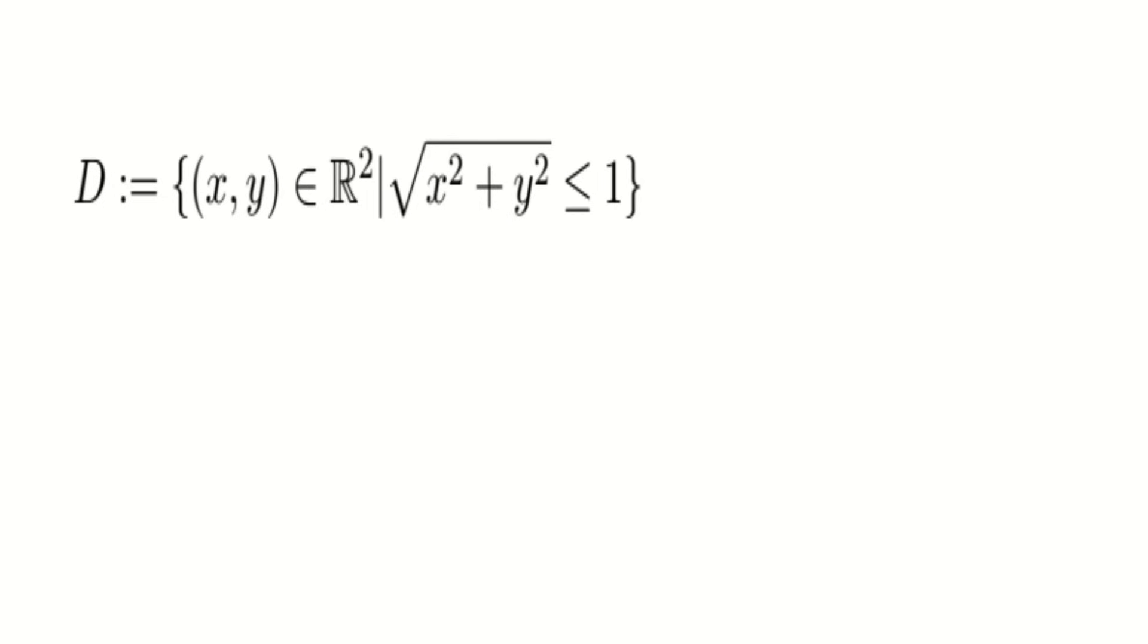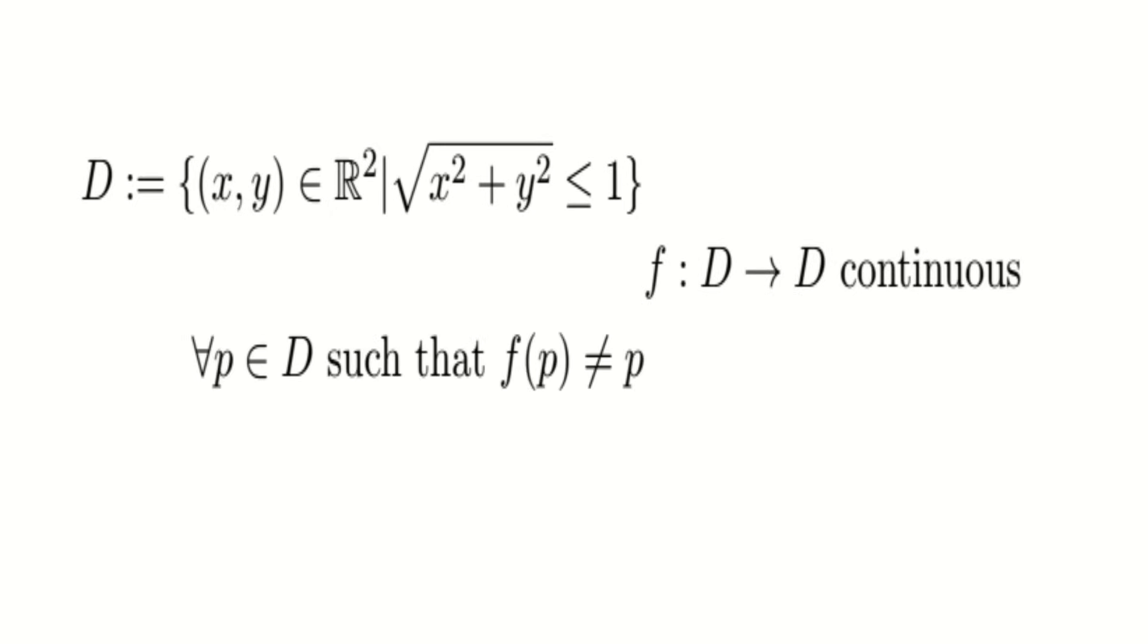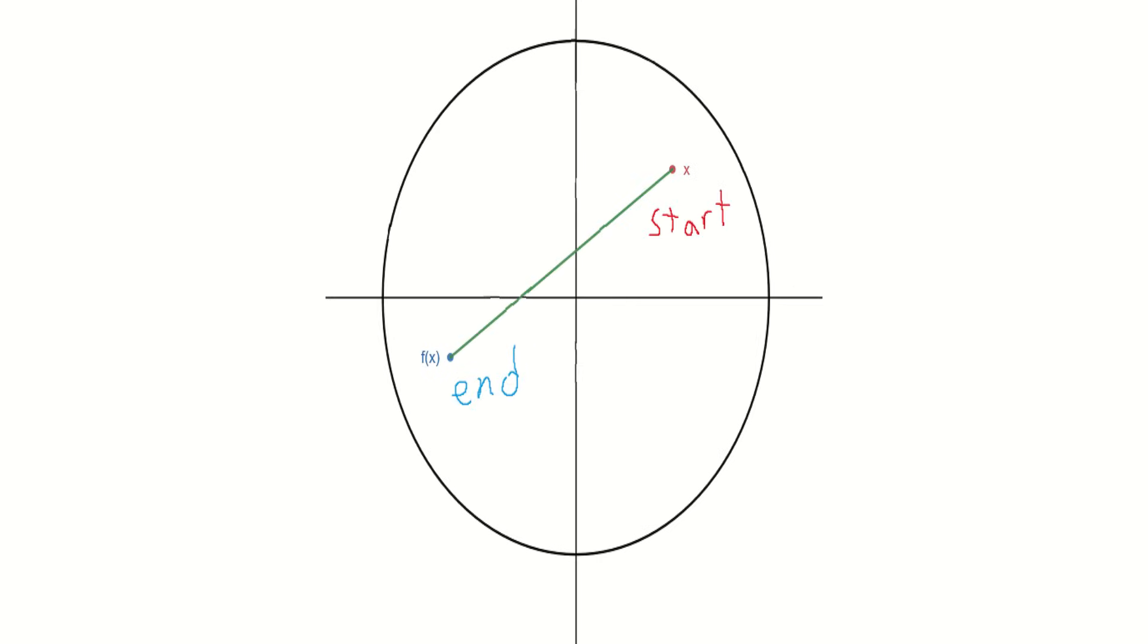Moving on to the actual proof, consider, for the sake of contradiction, that there exists a continuous function, call it F for function, from the disk to itself that does not admit a fixed point. This means that all points move to a different location. This gives us a pair of distinct points, a starting location and an ending location, one before F and after F.